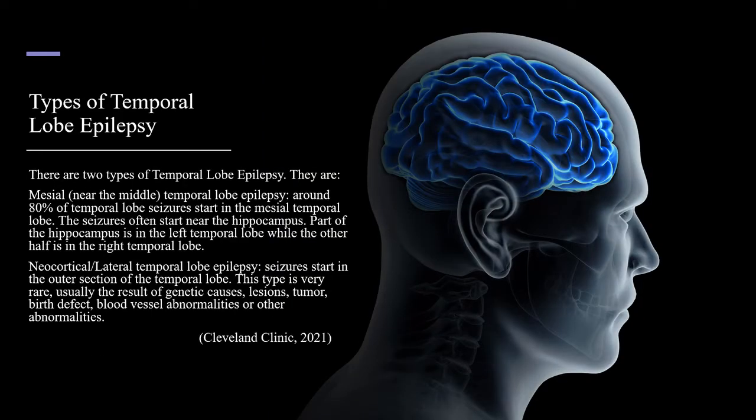There are two types of temporal lobe epilepsy. The first is mesial, or near the middle, temporal lobe epilepsy. Around 80% of temporal lobe seizures start in the mesial temporal lobe. The seizures often start near the hippocampus — part of the hippocampus is in the left temporal lobe, while the other half is in the right temporal lobe.